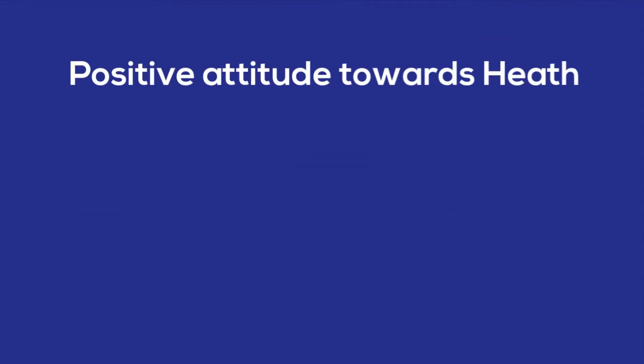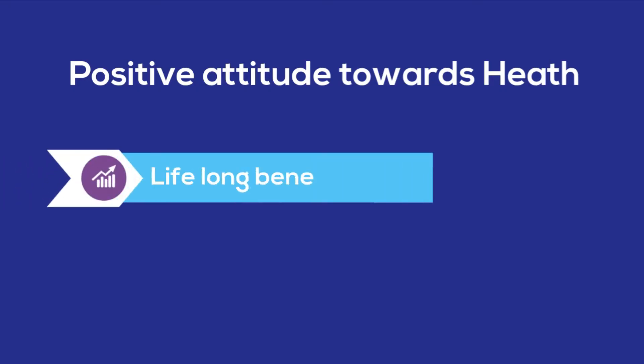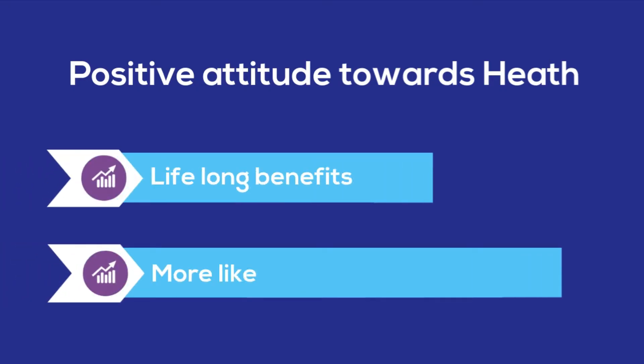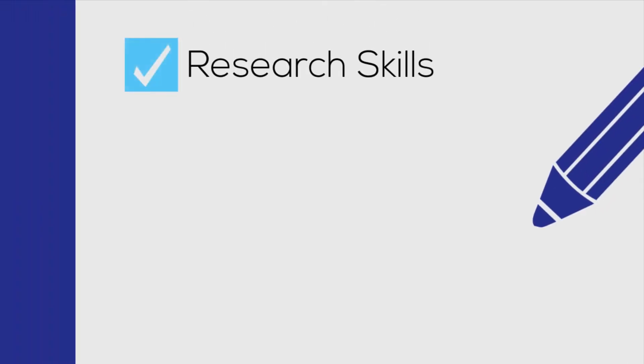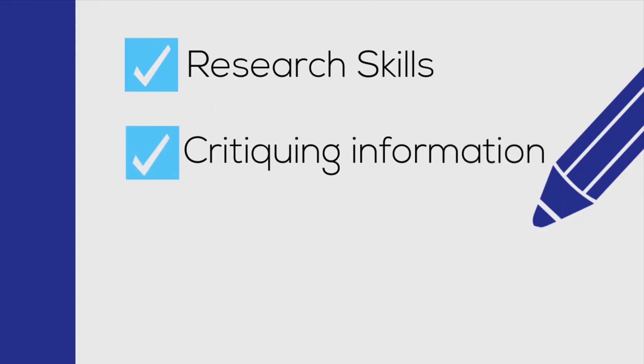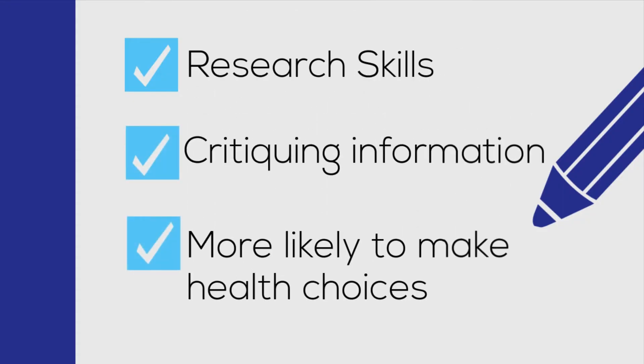In addition to this, if they have a positive attitude towards health, want to achieve it and see the lifelong benefits, then they are more likely to attain health. This is because healthy choices take self-discipline, determination and resilience to make them consistently. If a person also has skills relating to health, such as research skills or skills related to critiquing information, they are more likely to be able to make healthy choices.